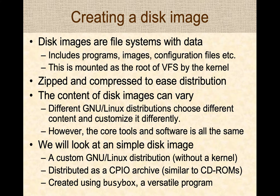In this presentation, we'll create a simple disk image — a custom Linux distribution. Our disk image will include a kernel; we'll just use an existing kernel on a Linux machine. We'll create it as a CPIO archive, which is very similar to the file system used on CD-ROMs. To create our Linux distribution, we'll use a special program called BusyBox.